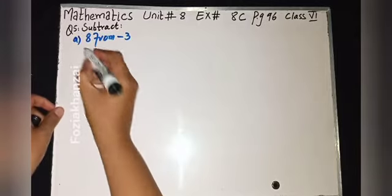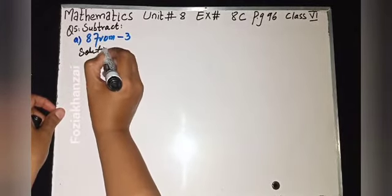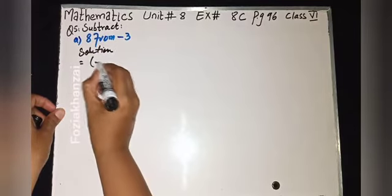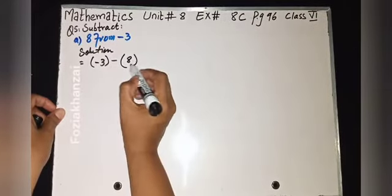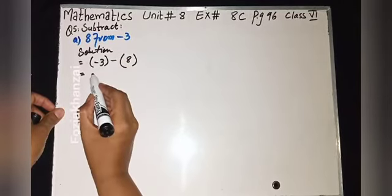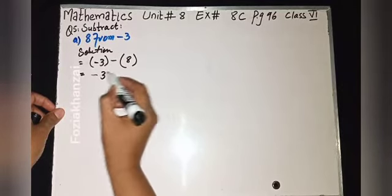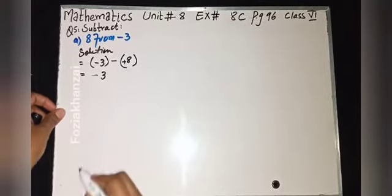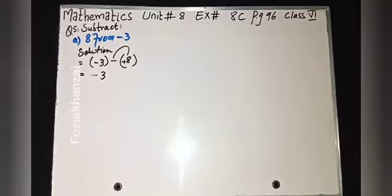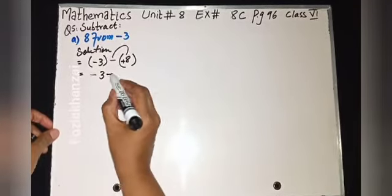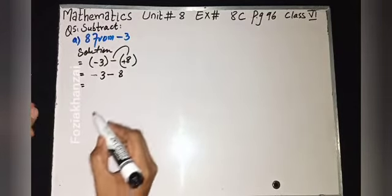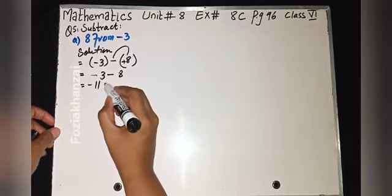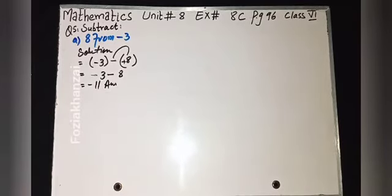First we write minus three, close bracket, put subtract sign, then eight. Remove the round bracket: minus three, minus plus minus eight becomes minus three plus eight. That gives us eight minus three equals eleven with a minus sign. The answer is minus eleven. Subtract eight from minus three.